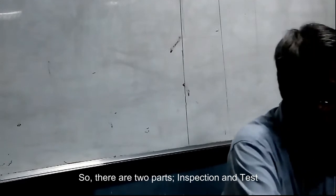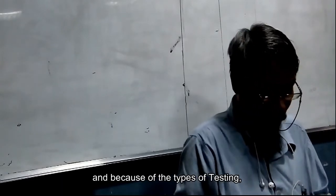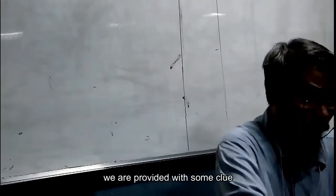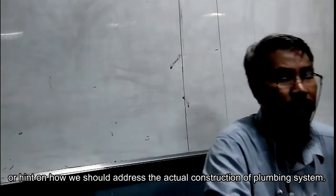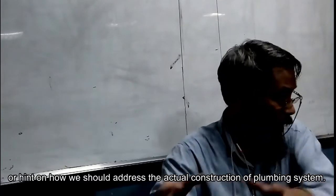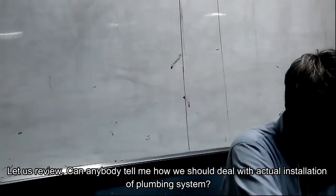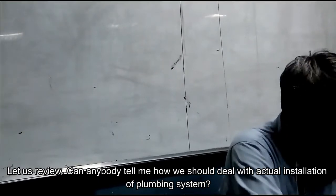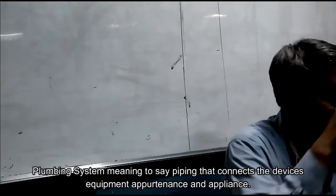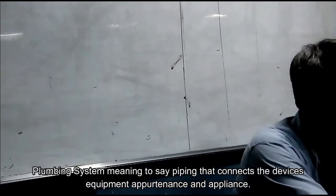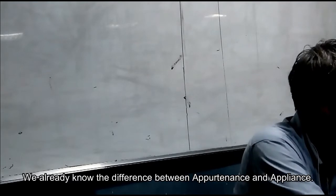So there are two parts, inspection and test. There are at least three types of testing. Because of the type of testing, we are provided with some clue or hint on how we should address the actual construction of plumbing system. So let us review. Can anybody tell me how we should deal with the actual installation of plumbing system? Plumbing system meaning the pipe that connects the devices, equipment, appurtenances, and appliances.